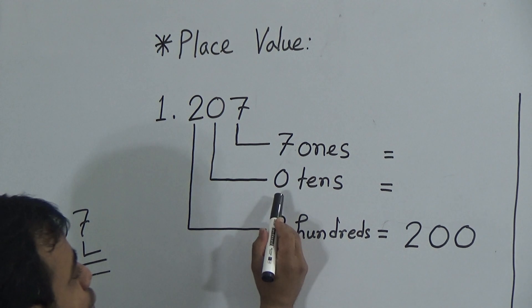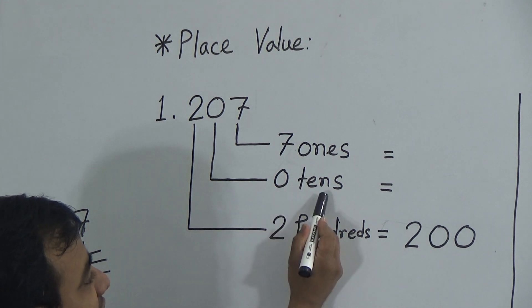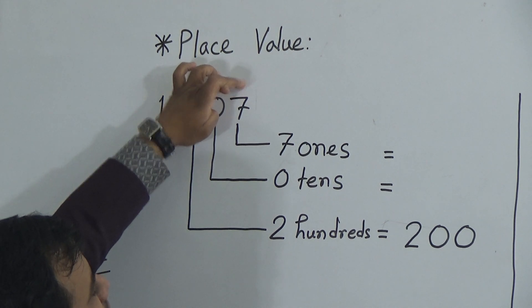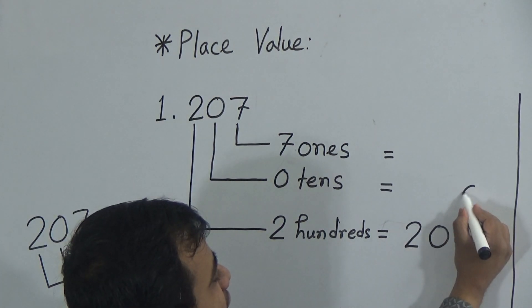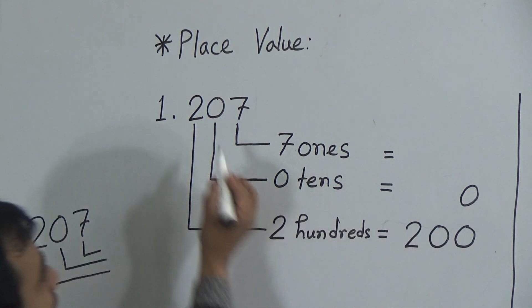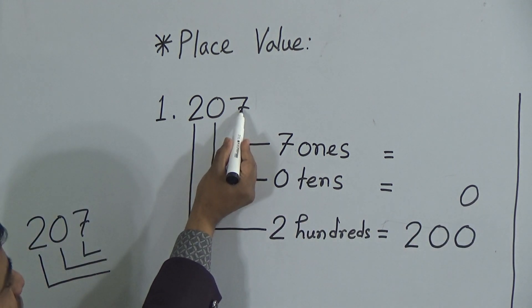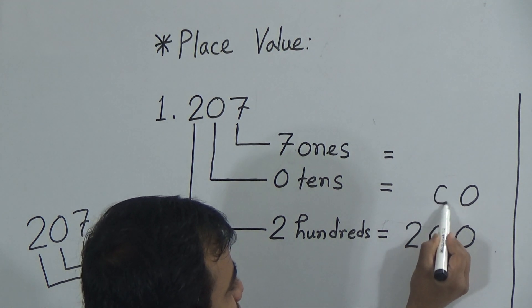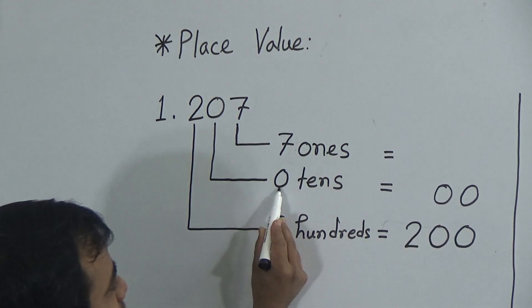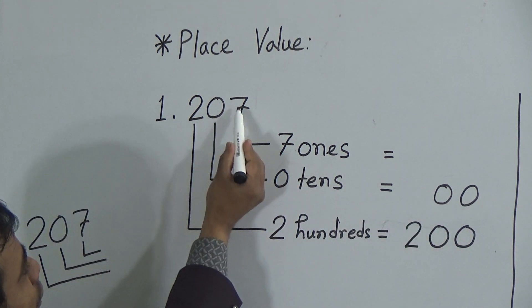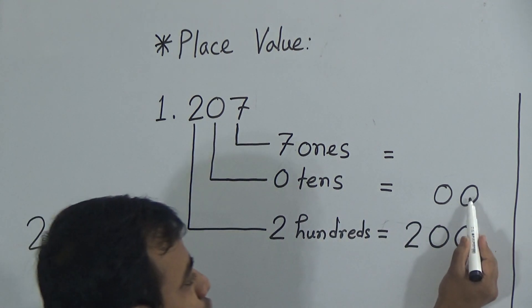Then, my dear students, we have 0 tens. After 0, how many digits are there? There is only 1 digit, so we will give 1 zero on the top right. We write down a 0 and before it we place this number, which is 0. This 0 indicates the tens digit, and we use 1 zero here because after 0 there is only 1 digit.